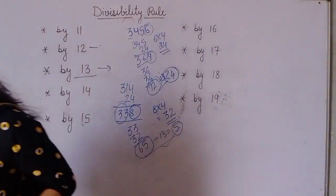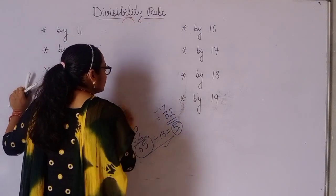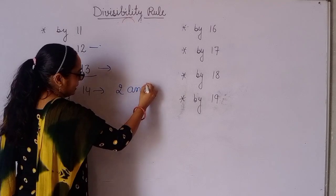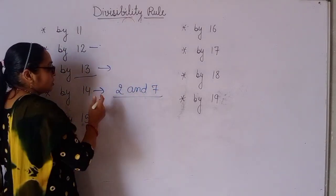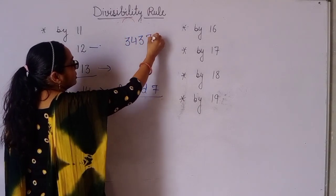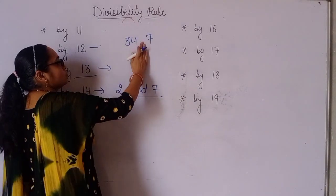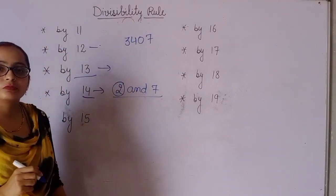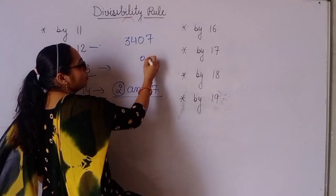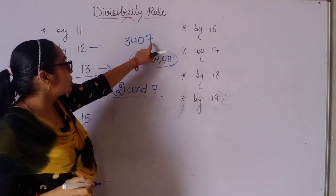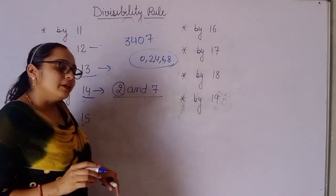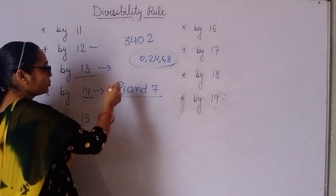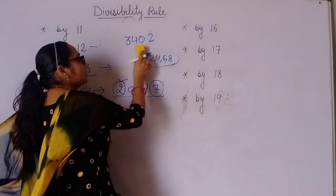Now, any number is divisible by 14 if it is divisible by both 2 and 7. Suppose I have the number 3437. First, check divisibility by 2: the unit place should be 0, 2, 4, 6, or 8 — an even number. Here the unit digit is odd, so we already know this number is not divisible by 14. But suppose we had an even number ending digit; then we'd check divisibility by 7 as well.